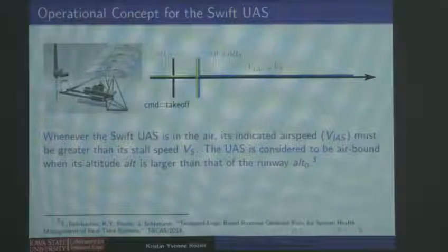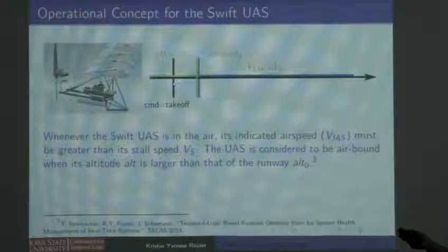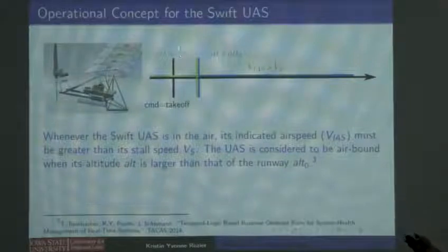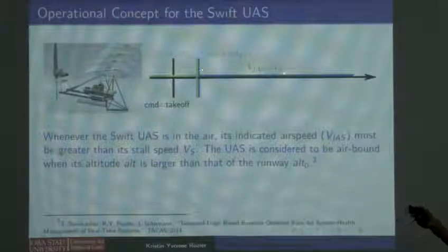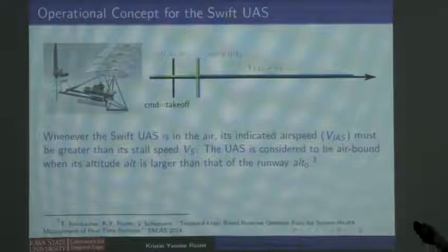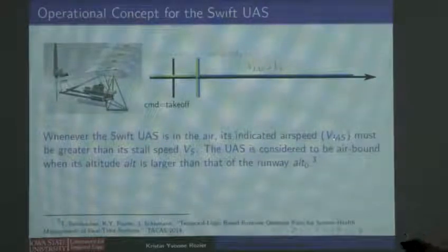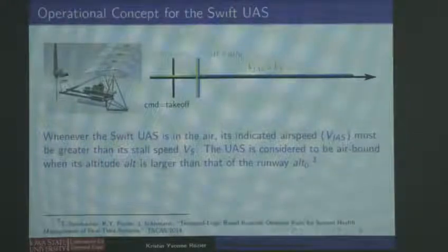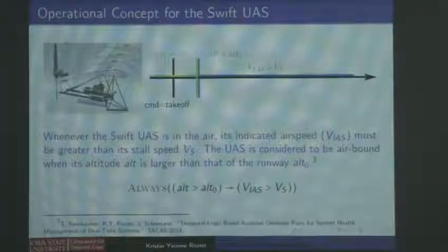This system also has an operational concept. They wanted to specify things like: there is some time at which it will receive a command to take off, and after that time, its altitude needs to become greater than that of the runway. While its altitude is greater than the runway — while it's in the air — it needs to maintain certain sanity checks. Its indicated airspeed has to be greater than its stall speed the whole time, so the aircraft flies the way we intend. Here is a way we can incorporate that using logic, and we analyzed this.